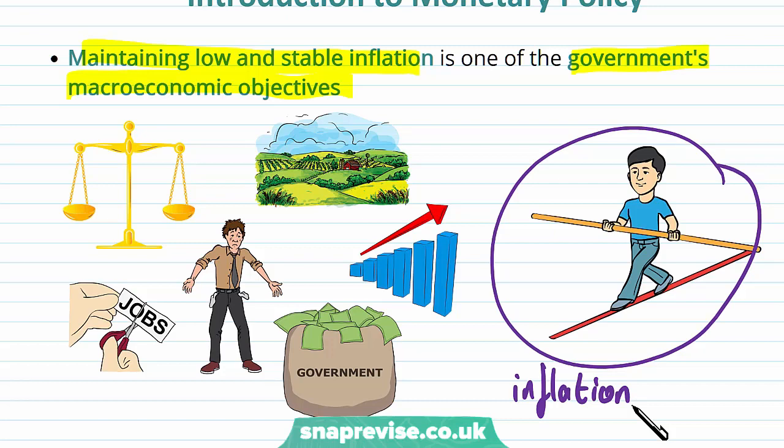The six other macroeconomic objectives are: having a balance of payments, ensuring job stability, making sure there's a balanced budget, a certain minimum level of living standards, maintaining a level of economic growth, and also maintaining environmental standards.